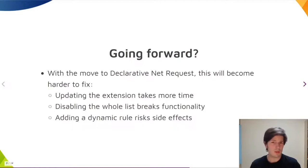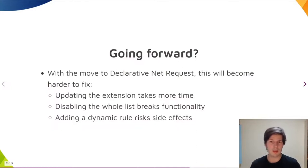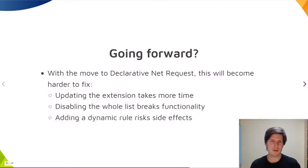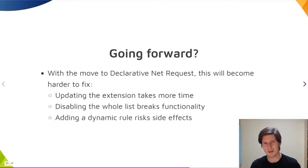You could disable that whole static list, but that will remove some of the main functionality of the extension. You could try to add a new rule dynamically, with more priority, that works as the opposite of the problematic one. But in that case, you risk side effects, because your new rule does not just overwrite the wrong one, but takes precedence over all those other tens of thousands of static rules.